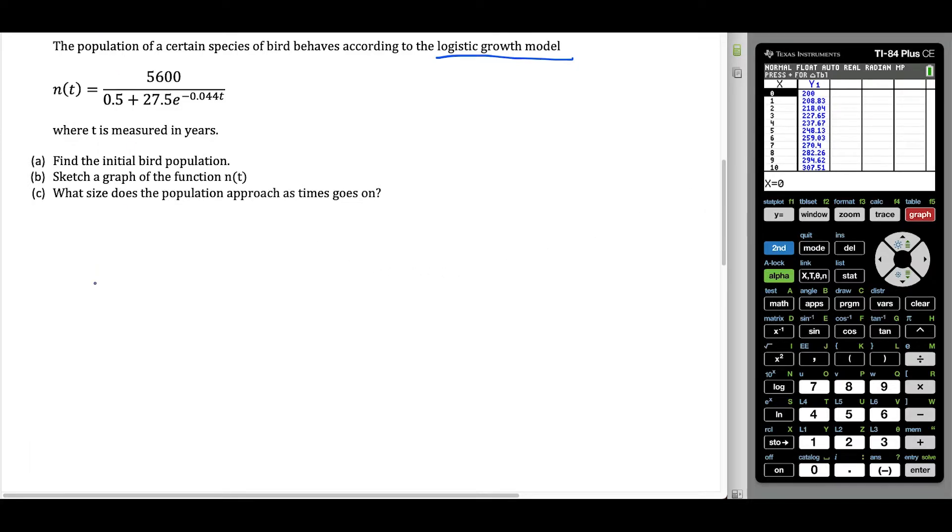If we want the initial bird population, all we have to do is press second graph and look at T equals zero. We have a bird population of 200. So for part A, the population at zero, which is n(0), is going to be 200. We have 200 birds at the start of the question.